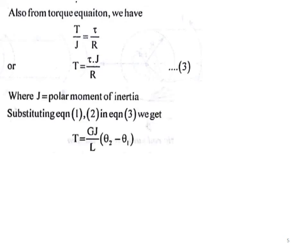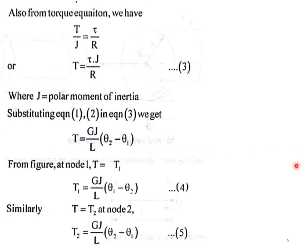Here J is the polar moment of inertia. Substituting equation 1 and 2 in equation number 3 we get that T is equal to GJ by L into theta 2 minus theta 1. From the figure at node 1, T is equal to T1, so T1 is equal to GJ by L into theta 1 minus theta 2, equation number 4.